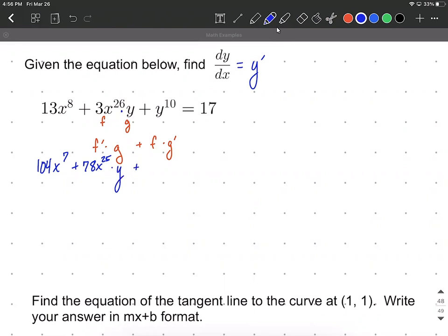Plus, this is where we copy down our function f. So 3x to the 26th multiplied by the derivative of y is going to be 1. But because it was differentiating y with respect to x, I'm going to put a y prime with that.